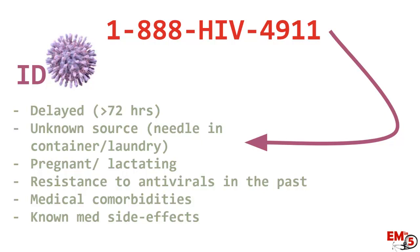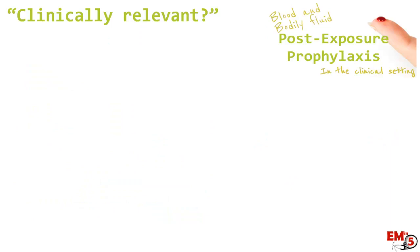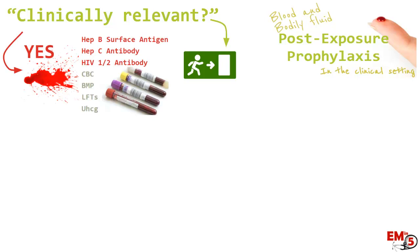Let's do a recap. The first thing to ask is whether this is even a clinically relevant exposure. If it's not, send them home. If you do have concerns, draw blood from both the patient and the source patient, including the hepatitis B surface antigen, hepatitis C antibody, and HIV 1 and 2 antibodies.